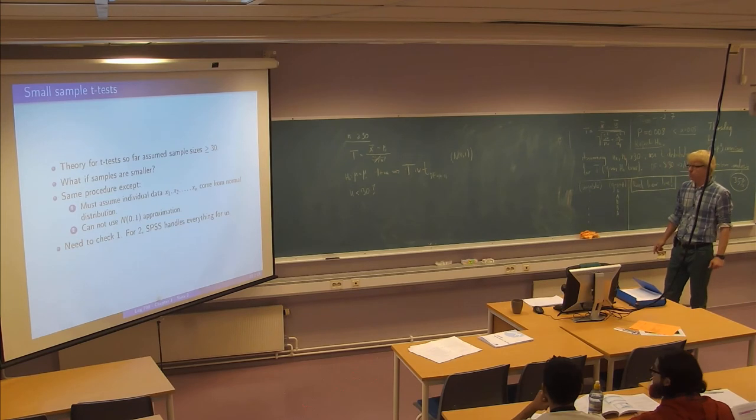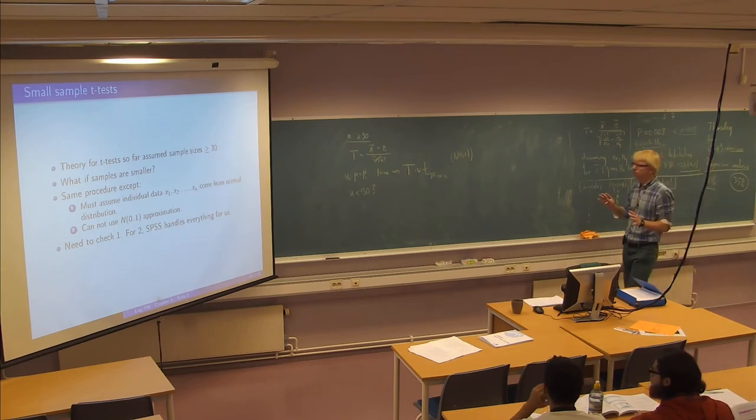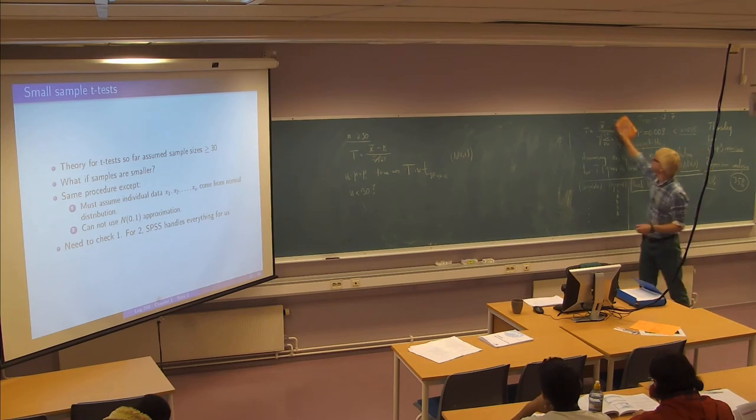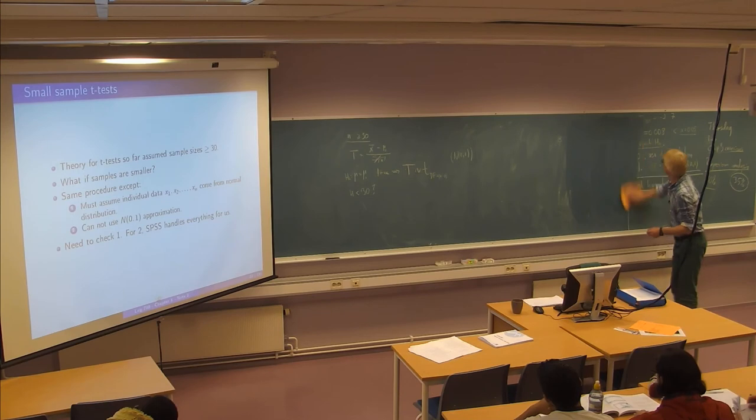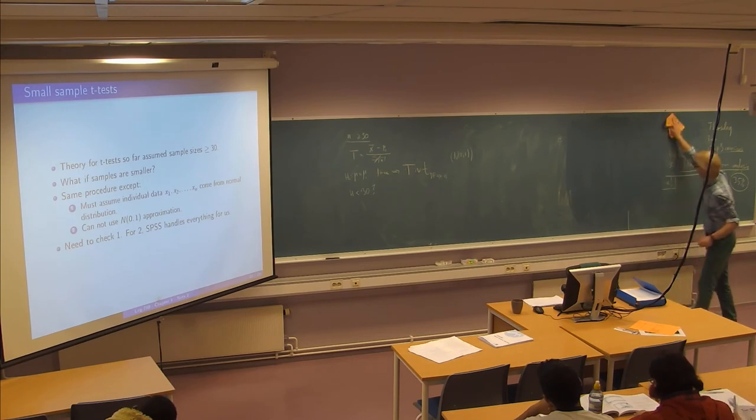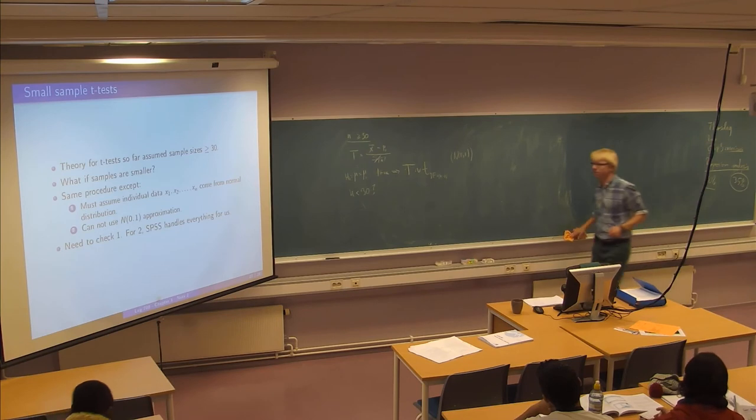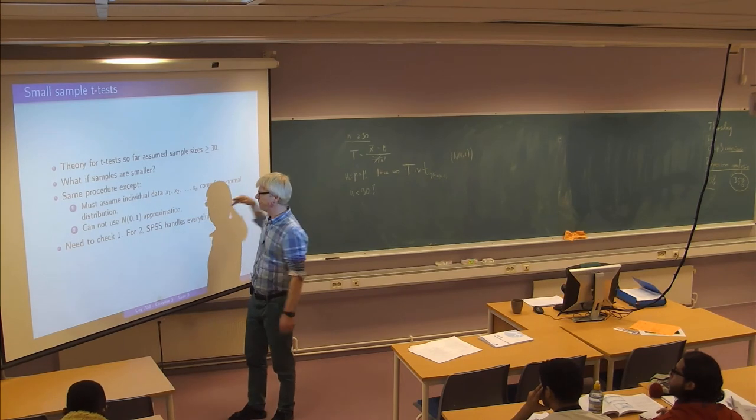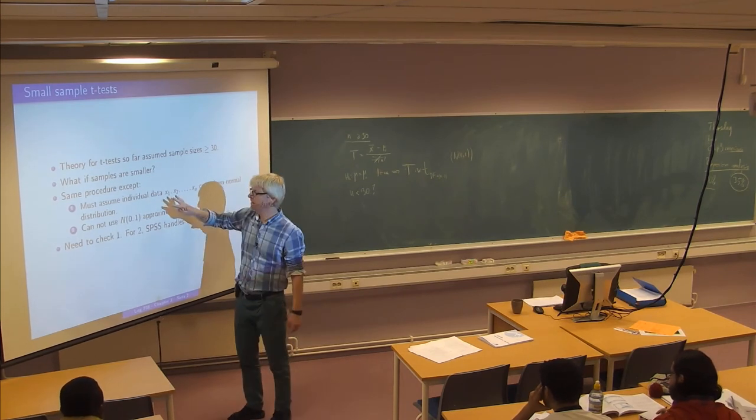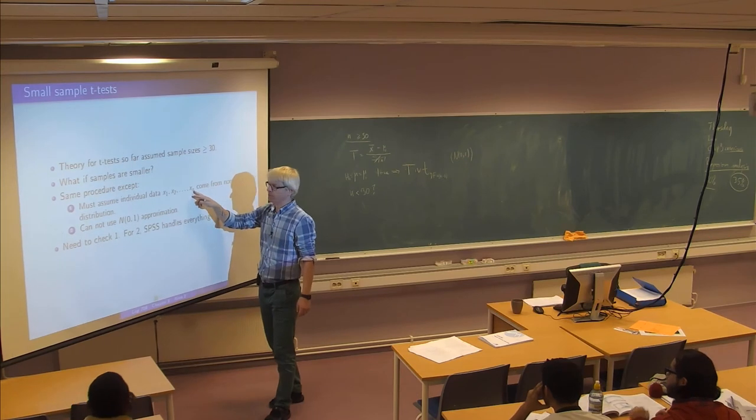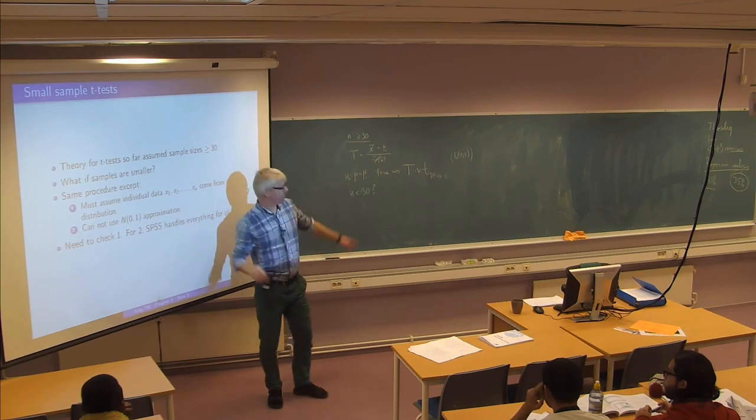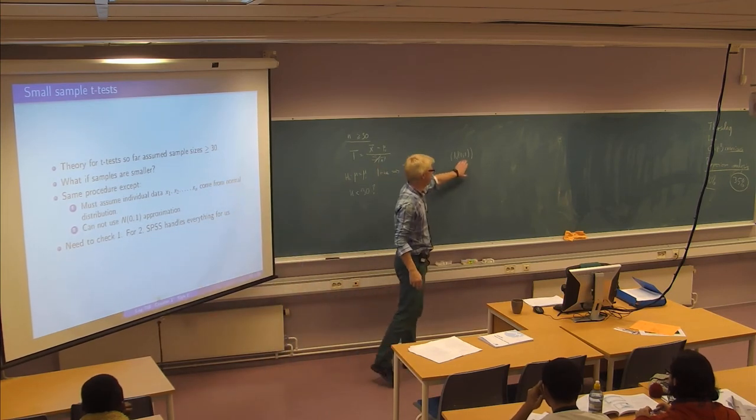So, what happens when the samples are not large? Well, we will actually do more or less the same thing, but we have to restrict a little bit the possible application of the test to cases where our initial data are really actually normally distributed. So, it says here we use the same procedure with a t-test, but we assume individual data come from normal distribution. And secondly, we can no longer use the normal approximation to, for instance, compute p-values.